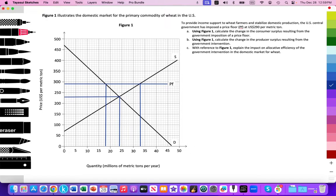So this video will be focused on answering question A, calculating changes in consumer surplus resulting from the imposition of the price floor. And the second video will look at question B, and the third and fourth video will look at question C. And those will also be linked in the video notes below.